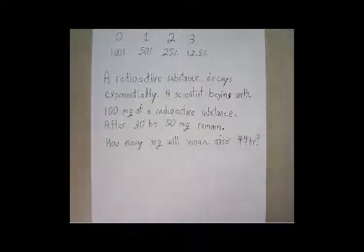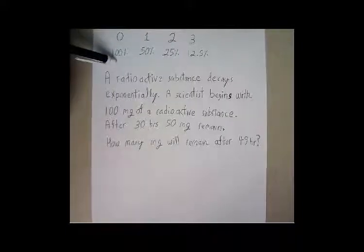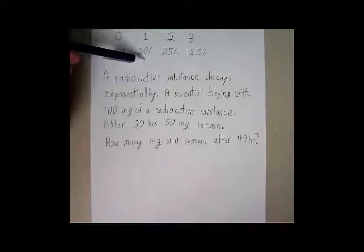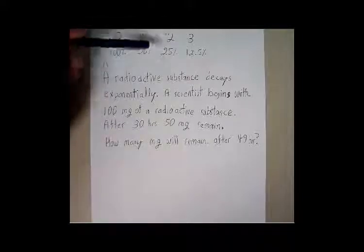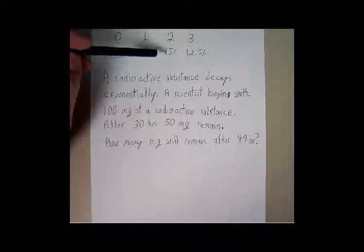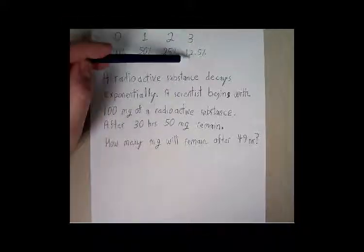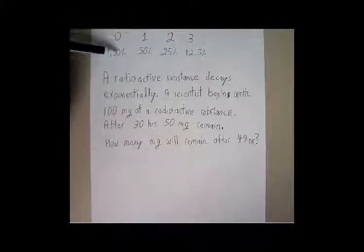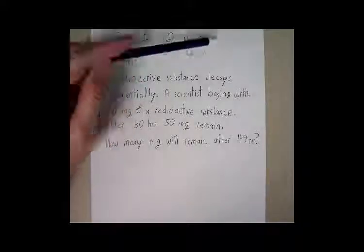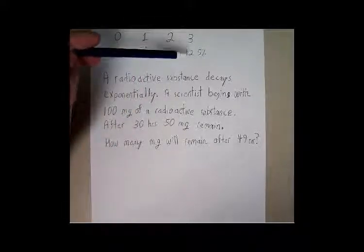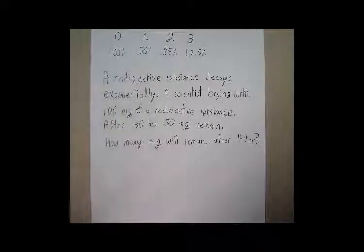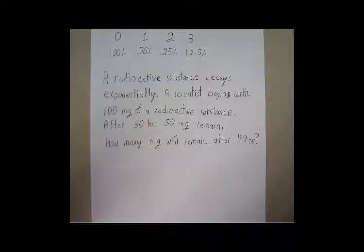So you can think of it as a substance would start out with 100%. Once you take the half-life once, you would have 50% of the original proportion remaining. Once you take the half-life a second time, you would have 25% of the original remaining. Once you take the half-life a third time, you have half the previous percentage, or now 12.5% of the original. And then this trend would continue. You can keep taking the half-life infinitely and you would end up with very minute amounts of the radioactive substance remaining.